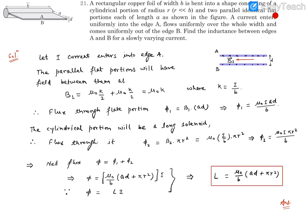Each of length a, as shown in the figure. A current enters uniformly into edge A, flows uniformly over the whole width, and comes uniformly out of edge B. Find the inductance between edges A and B for slowly varying current.